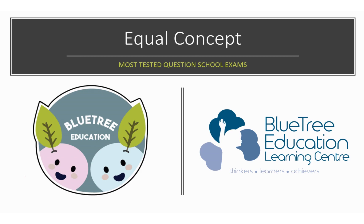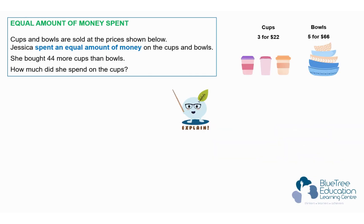Let's take a look at this question. Equal amount of money spent. It's mentioned that the cups and bowls are sold at the prices shown. The cups are sold at 3 for $22 and the bowls are sold at 5 for $66. Jessica spent an equal amount of money on the cups and bowls.